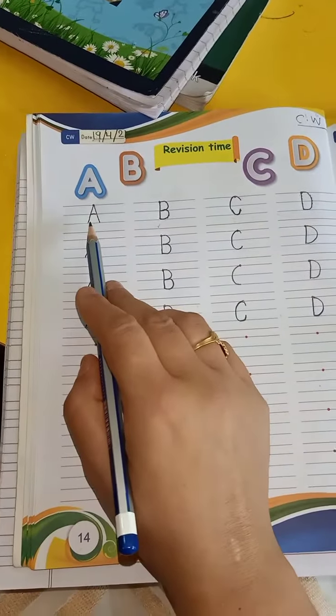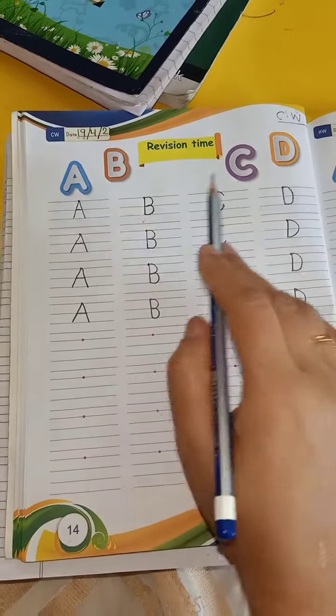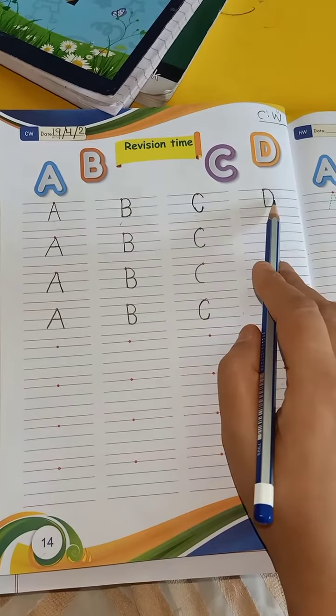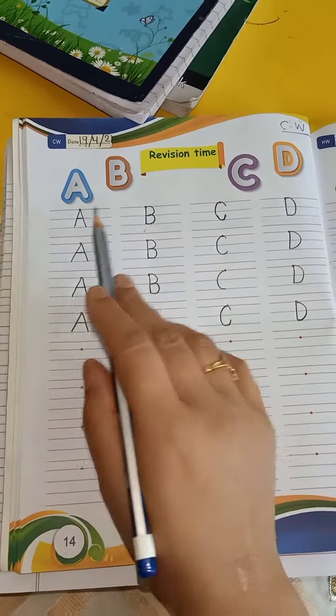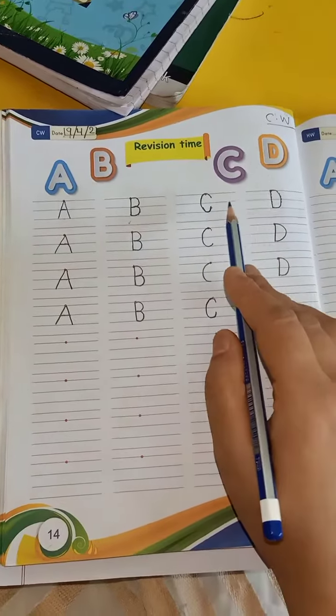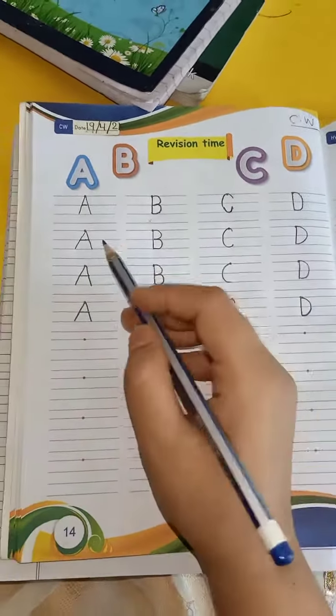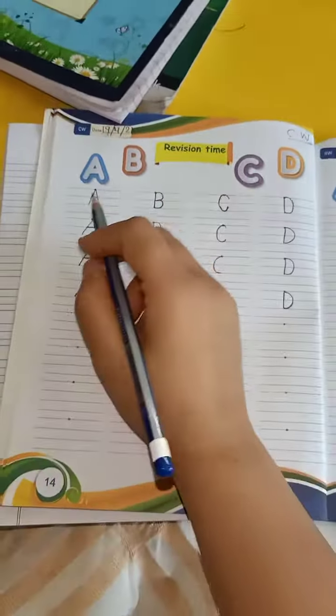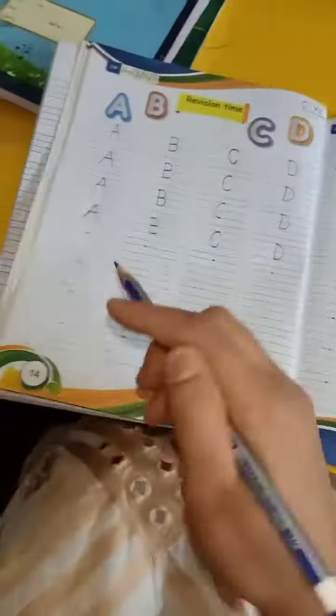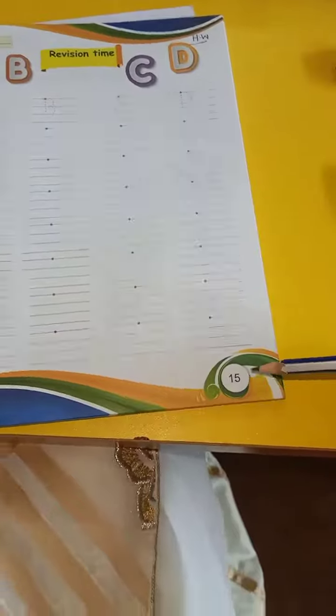A-B-C. C says K, D says D. A, Apple. B, B, Bowl. C, K, Cat. D, D, Dog. Okay, so you have to do A, B, C, D on page number 14 and 15.